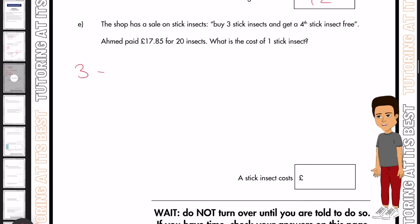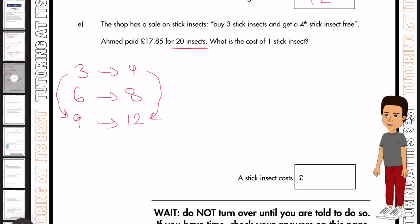So all we need to mainly do is understand that for every three he gets a fourth free. So if he buys three, he gets four. If he buys six, what does he get? Eight. As you can see, it's a three times table. If he gets nine, he gets 12. And that's because for every three, he gets one extra. So if you're timesing this by three, you'd have to times this by three. So in total, he's got 20 insects.